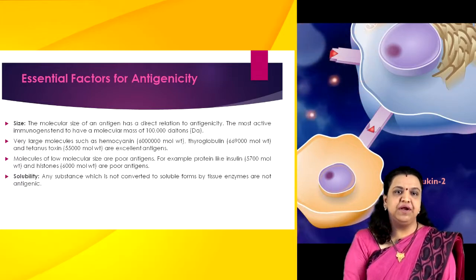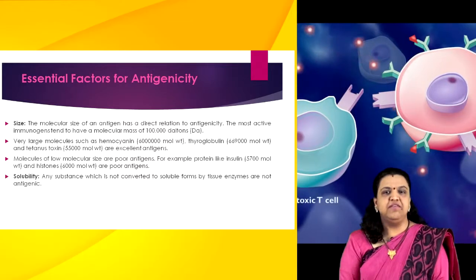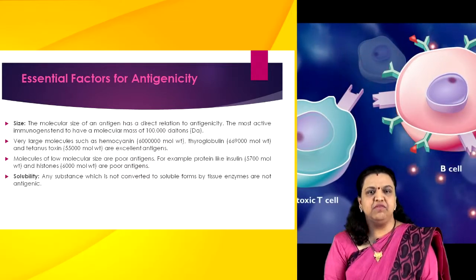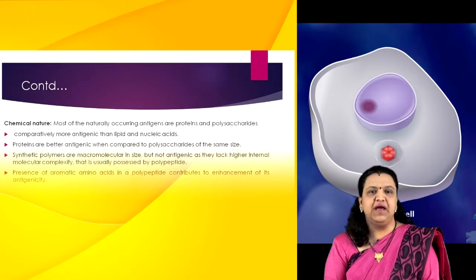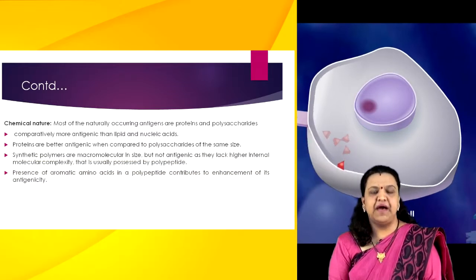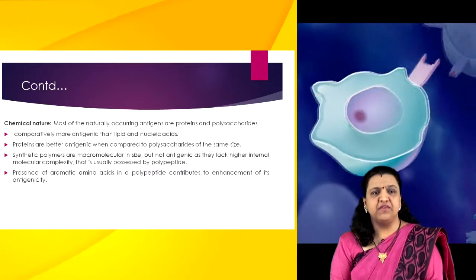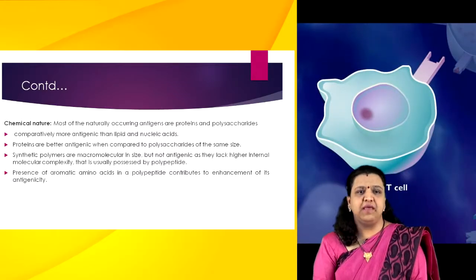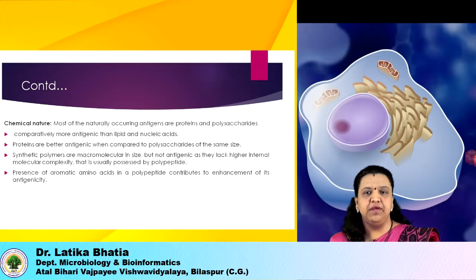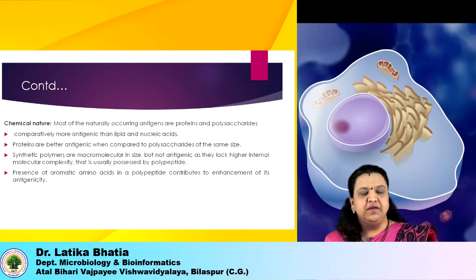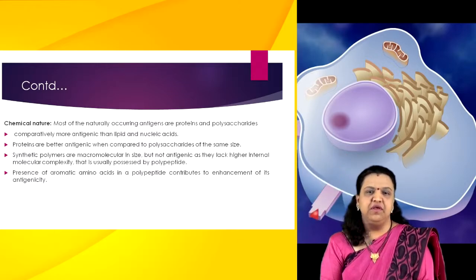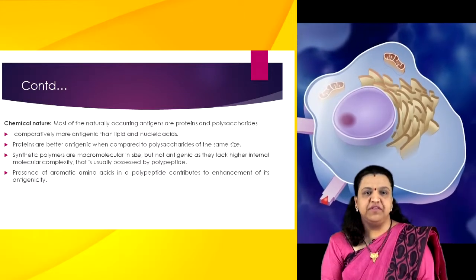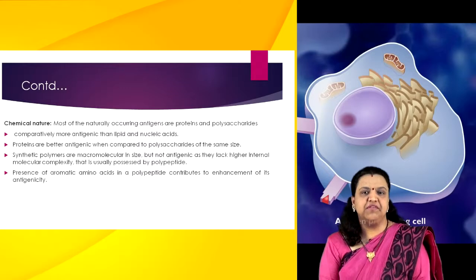Another essential factor is solubility. The non-antigenicity of synthetic polymers is attributed to their insolubility in body fluids, and any substance which is not converted to soluble form by tissue enzymes is also non-antigenic. Chemical nature also plays an important role. Most naturally occurring antigens are proteins and polysaccharides, and these are comparatively more antigenic than lipids and nucleic acids. Proteins are better antigens than polysaccharides of the same size. Synthetic homopolymers composed of a single amino acid or sugar tend to lack immunogenicity regardless of size, while co-polymers composed of different amino acids or sugars are usually more immunogenic than homopolymers. These studies show that chemical complexity contributes to immunogenicity.